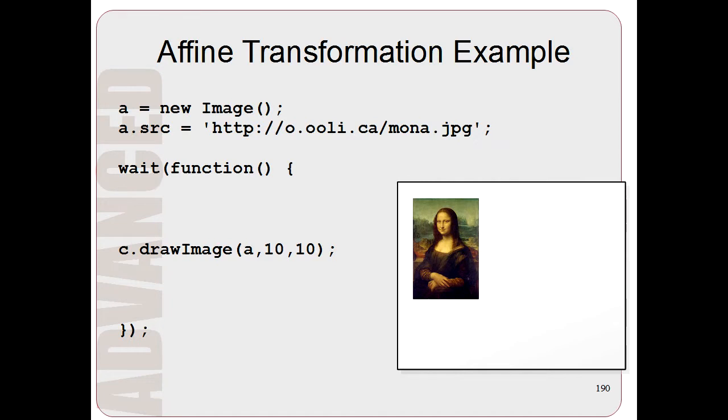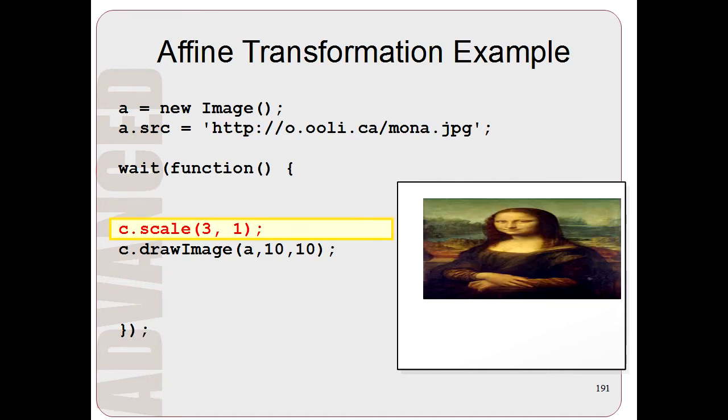Now to do an affine transformation, we just add a line before the draw image. So here we'll add this line c.scale. And what this transformation does is it stretches the Mona Lisa. So now it looks a lot wider than it normally is. And that's an example of the sorts of graphical effects that you can do with these affine transformations.